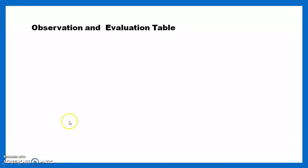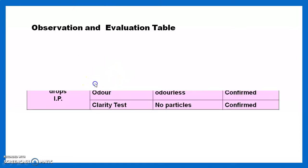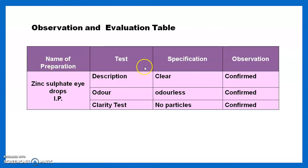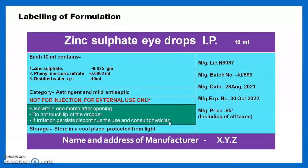The observation table contains: name of preparation, test, specification, and observation. Name of preparation is zinc sulfate eye drop IP. Evaluation tests include description, odor, and clarity test. The solution is clear, odorless, and has no particles, confirming all evaluation tests.